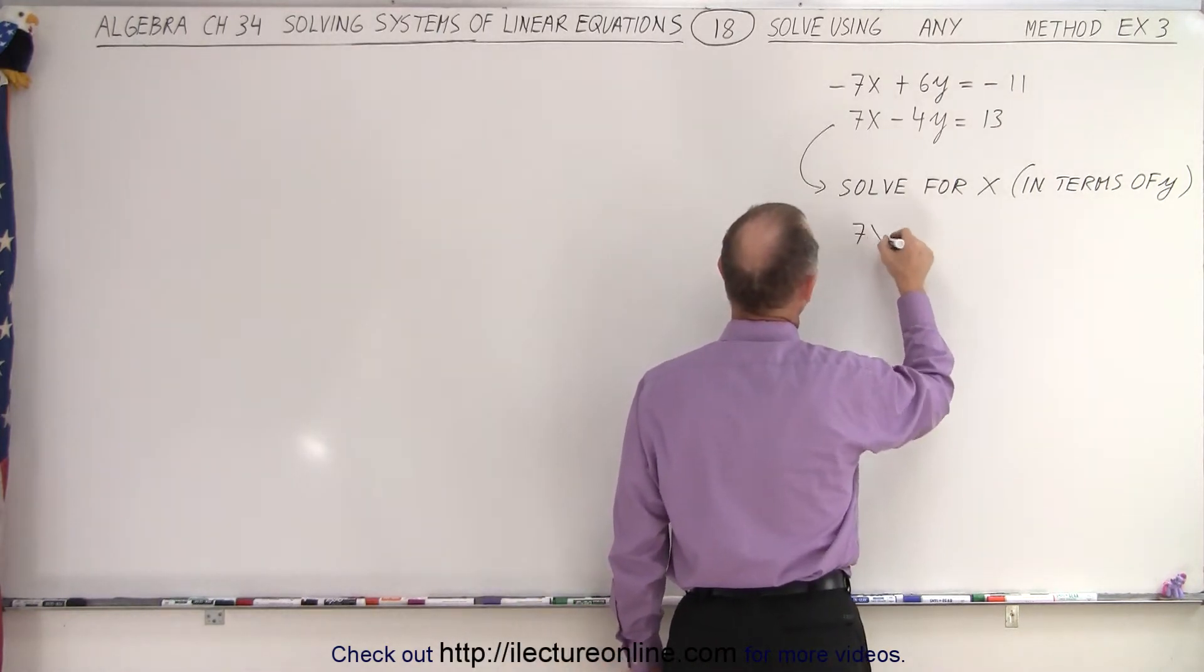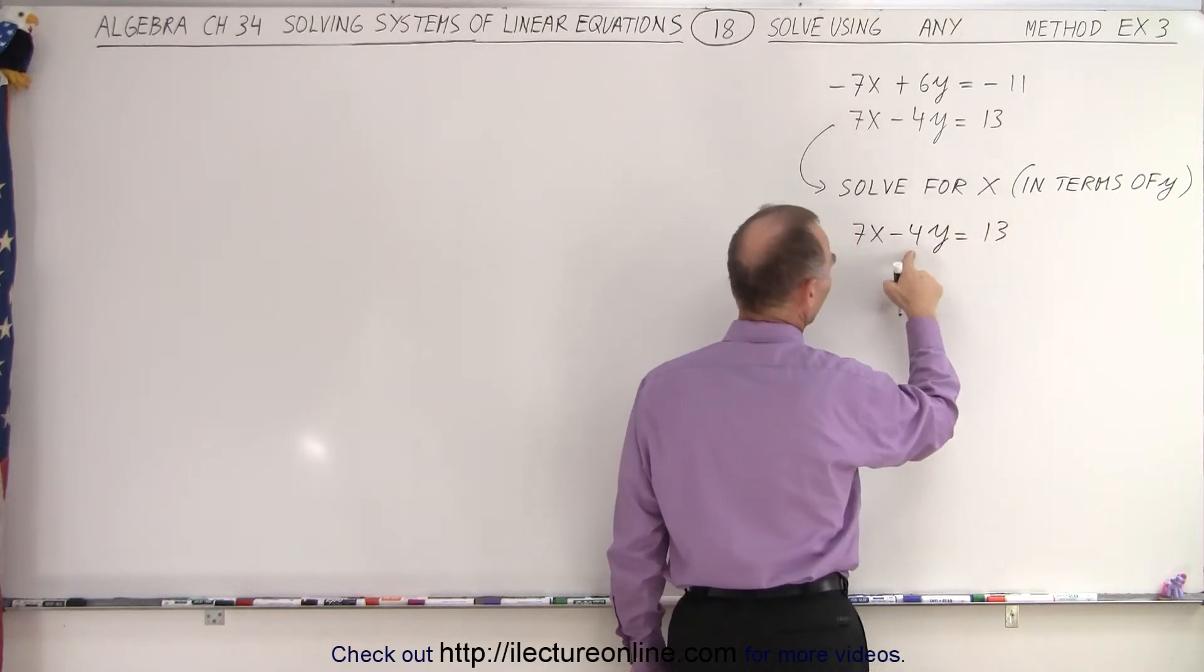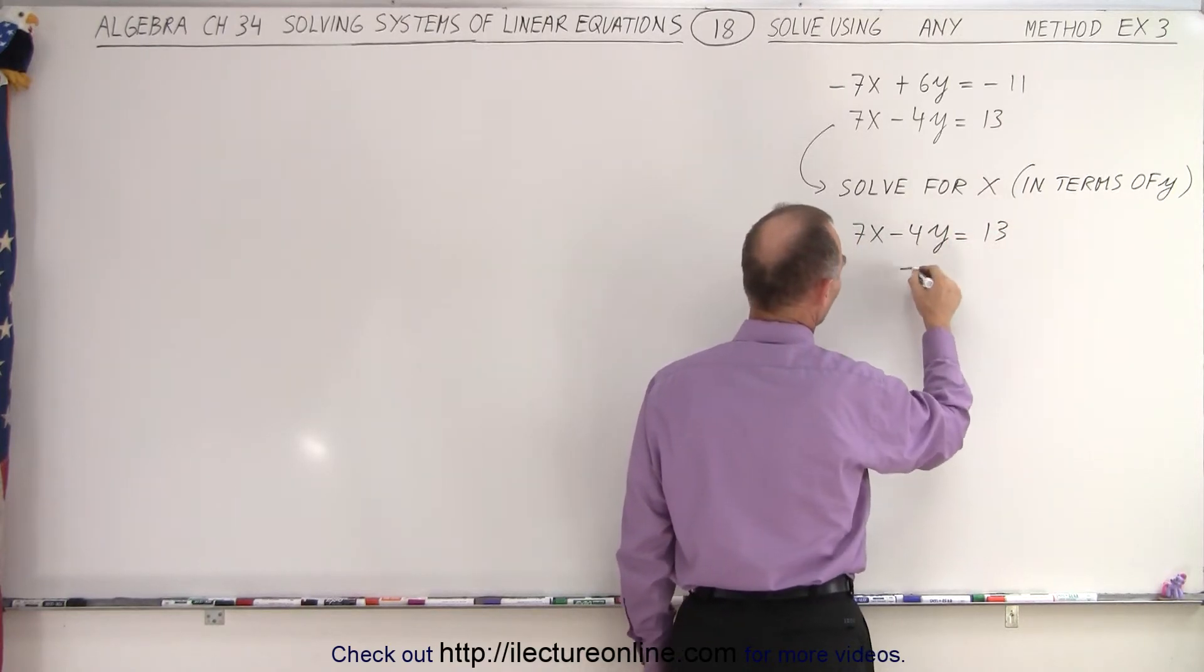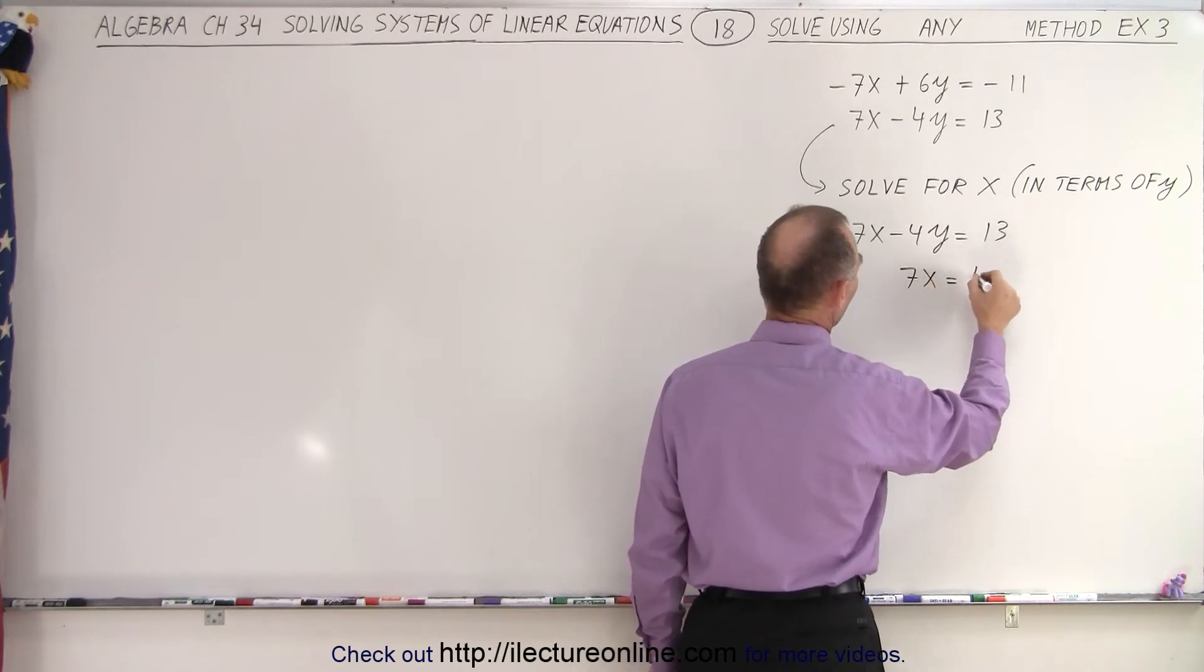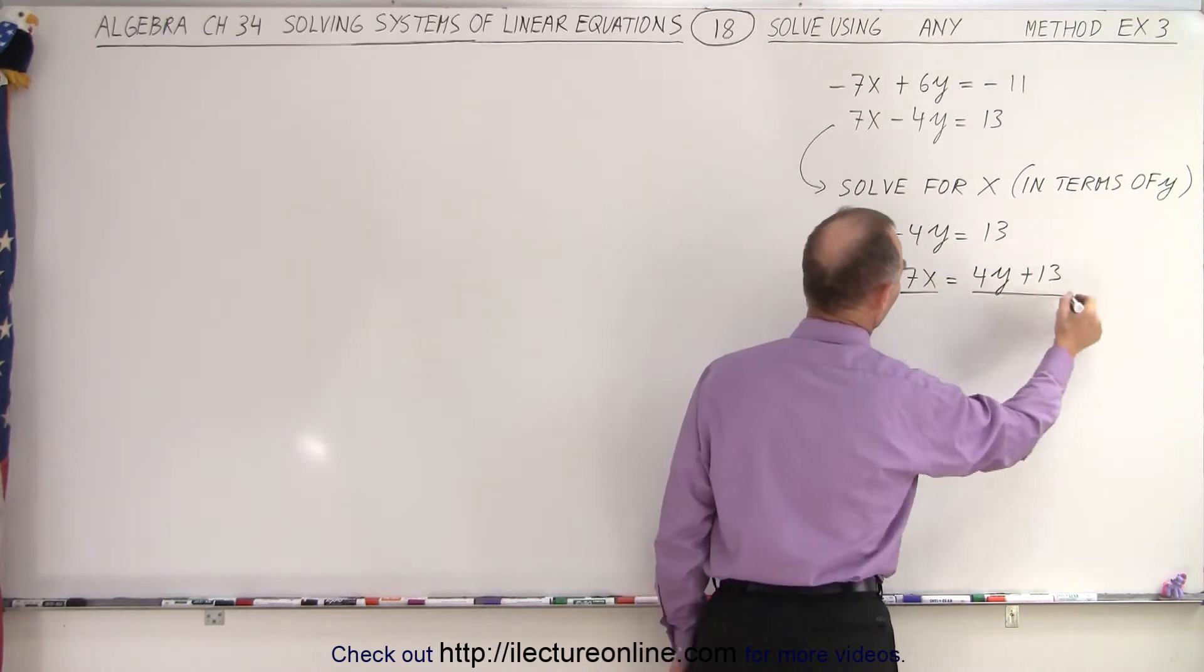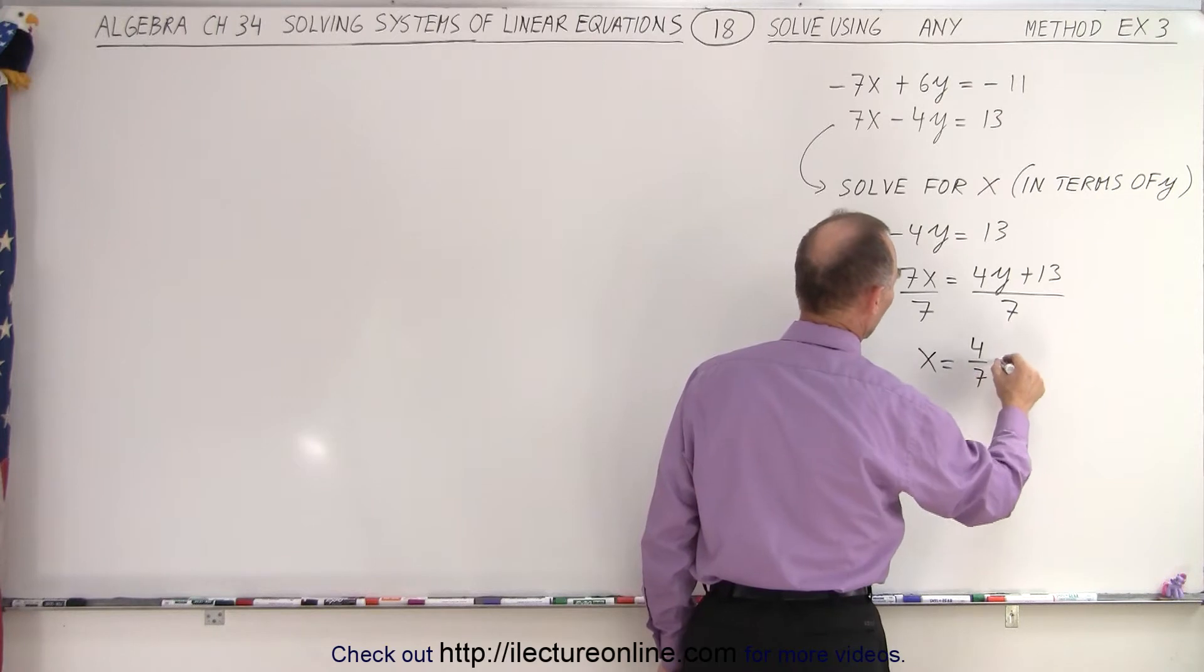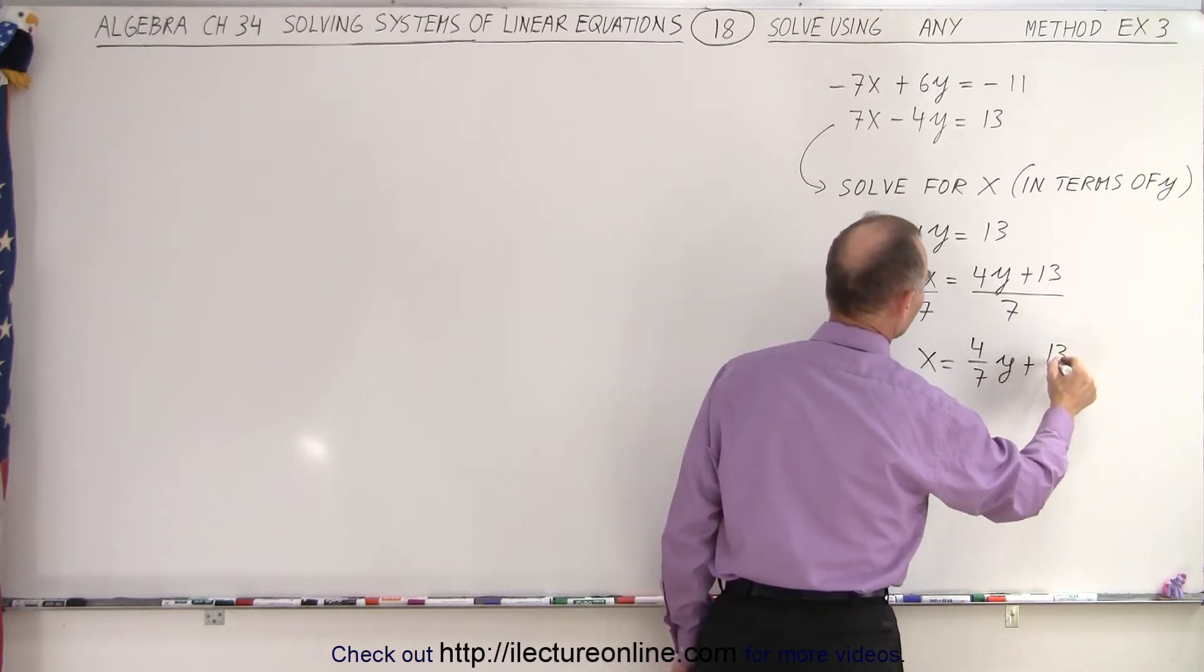All right, so we get 7x minus 4y equals 13. So the first thing we're going to do is move the 4y to the other side. So we get 7x is equal to positive 4y plus 13, and then we divide both sides by the numerical coefficient from the x. So we get x is equal to 4 over 7y plus 13 over 7.